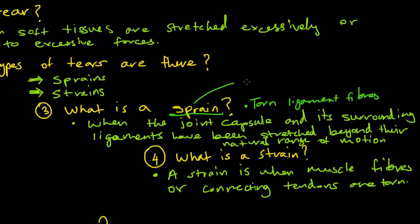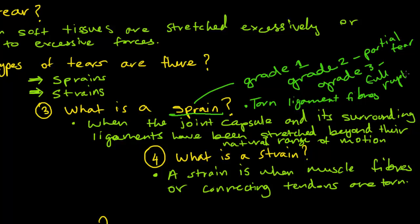The other thing I'd like to mention is that sprains have a system of grading. There's grade 1, which is the lowest grade, grade 2, which is a partial tear, and finally grade 3, which is the most severe tear. You can say full rupture. Grade 1 is just a very small tear, not much.